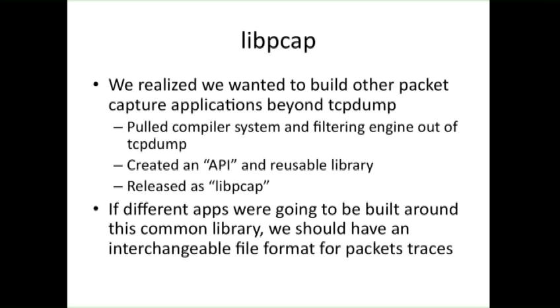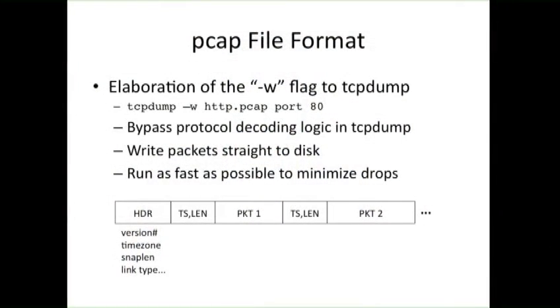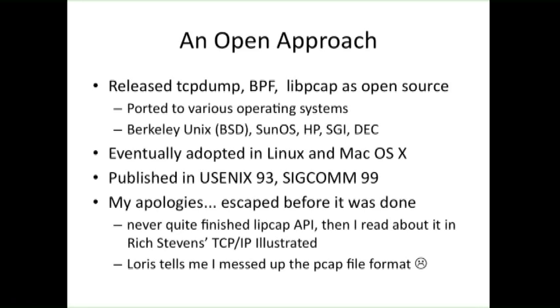I built this cool parser for a novel language and came up with novel optimization algorithms. We thought: there's all this great infrastructure in TCPdump now — why don't we pull out the compiler system and filtering engine, create an API for that infrastructure, and wrap it in its own library? That became the PCAP library that we released. I rewrote TCPdump to use the PCAP library. And if different applications were going to be built around this common library, it made sense to have a common file format for packet traces — that became the PCAP file format, essentially an elaboration of the original -w flag in TCPdump. We released it as open source: TCPdump, BPF, libpcap. It got ported to a bunch of different operating systems, pieces made their way into Linux and ultimately macOS, and we published a couple of papers on it.